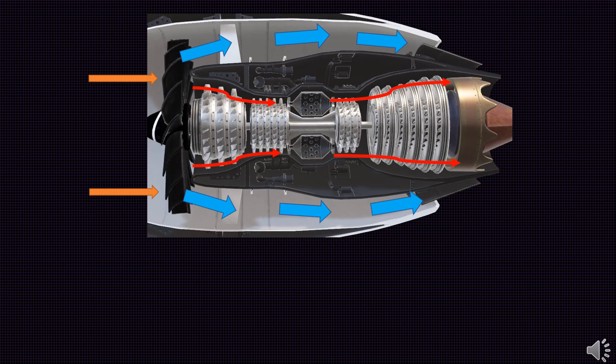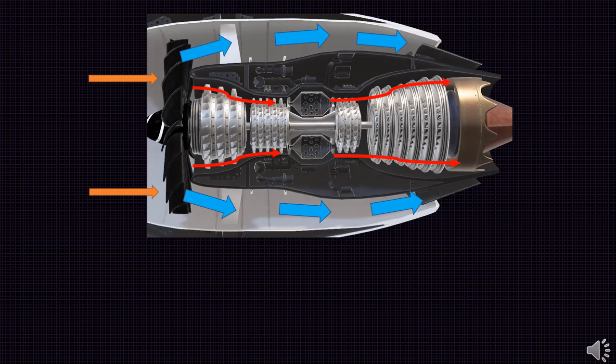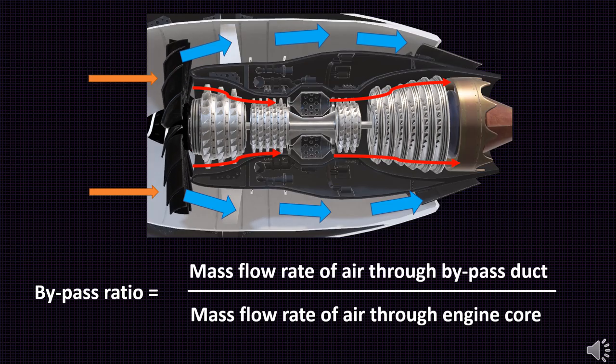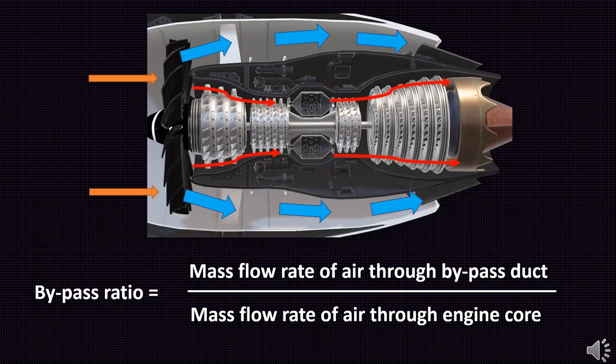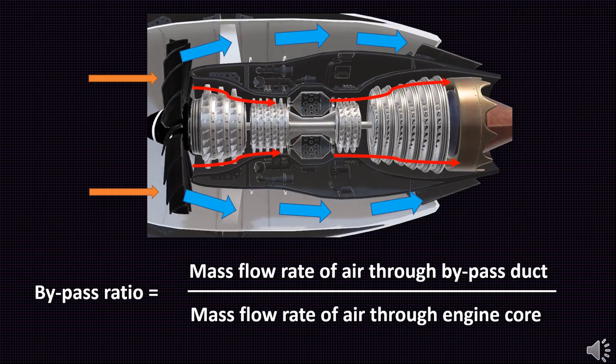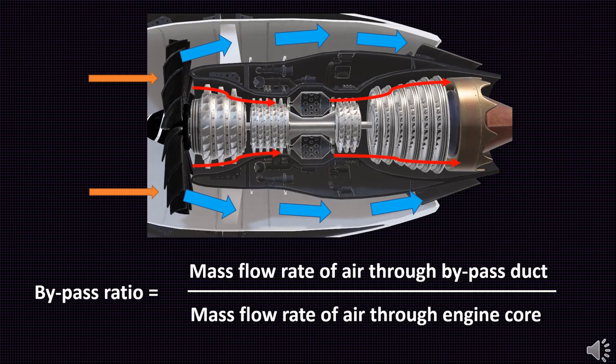This is measured by the term called bypass ratio. Bypass ratio is given by the ratio of mass flow rate of air entering the bypass duct to the mass flow rate of air entering the core section. So if the bypass ratio is 10, then 10 times more air is entering the bypass than the core.